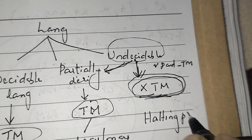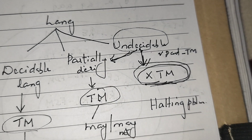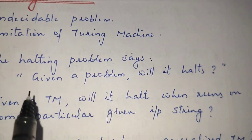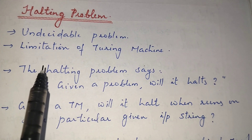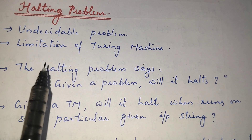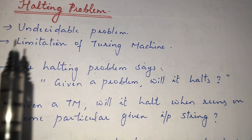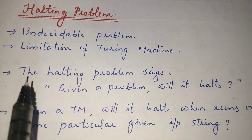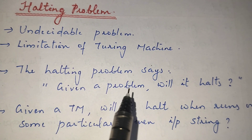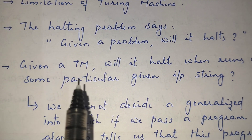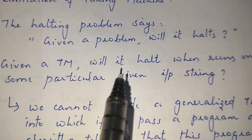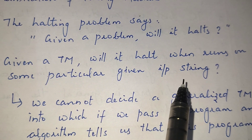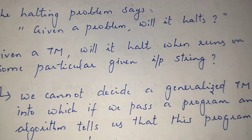The halting problem is one of the limitations of a Turing machine and is an undecidable problem. The problem is: given a Turing machine and a particular input, will the machine halt? We have a Turing machine and a doubt about whether it will halt when run on some particular input stream.